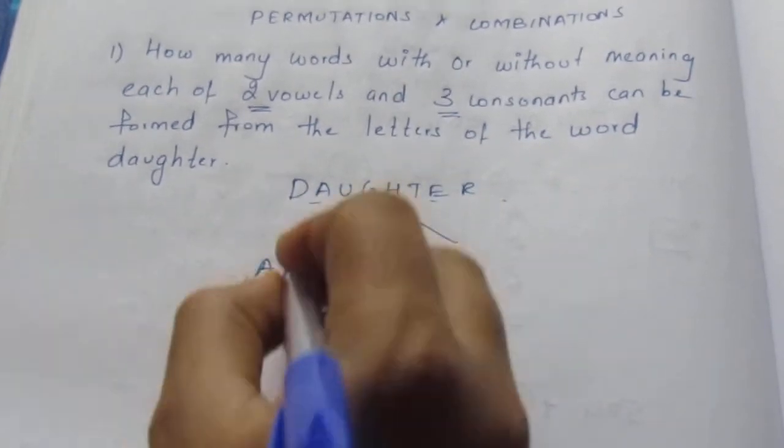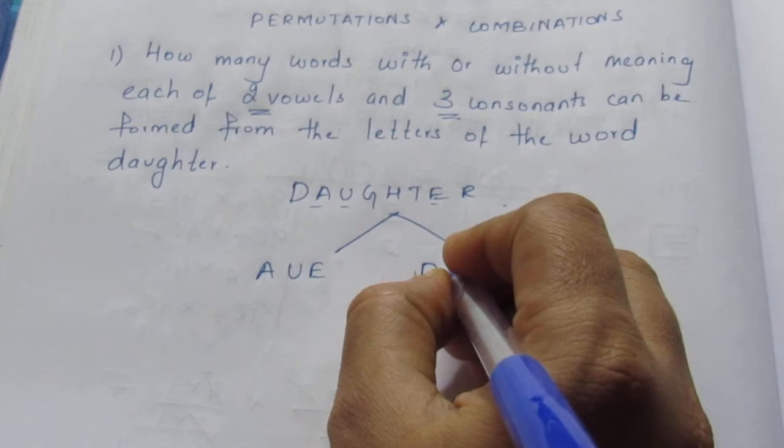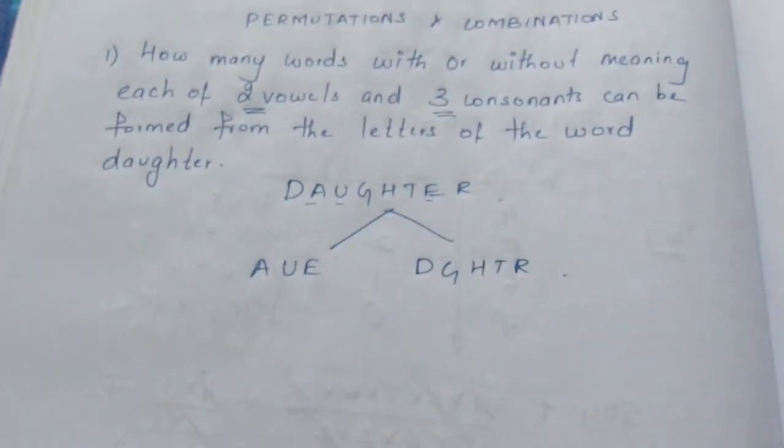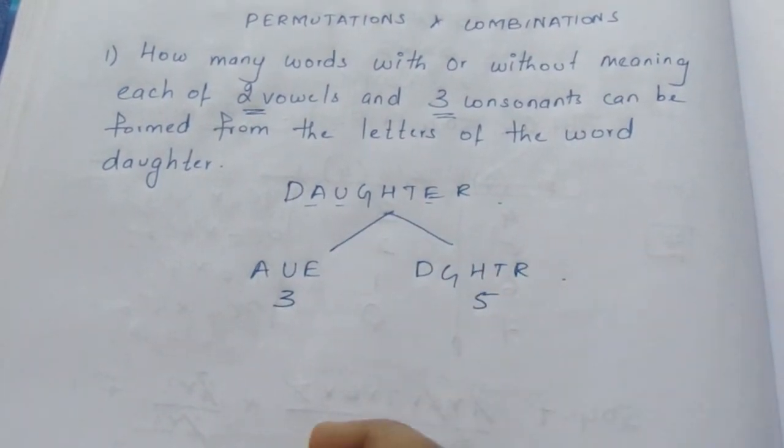Vowels here are A, U, E and consonants are D, G, H, T, R. So we have three vowels and five consonants.